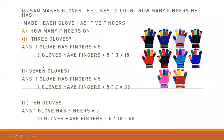The second one: seven gloves — how many fingers? If one glove has five fingers, then seven gloves have five times seven equals thirty-five. Seven gloves will have thirty-five fingers — counting: five, ten, fifteen, twenty, twenty-five, thirty, thirty-five. Then ten gloves: one glove has five fingers, so ten gloves have ten times five equals fifty fingers.